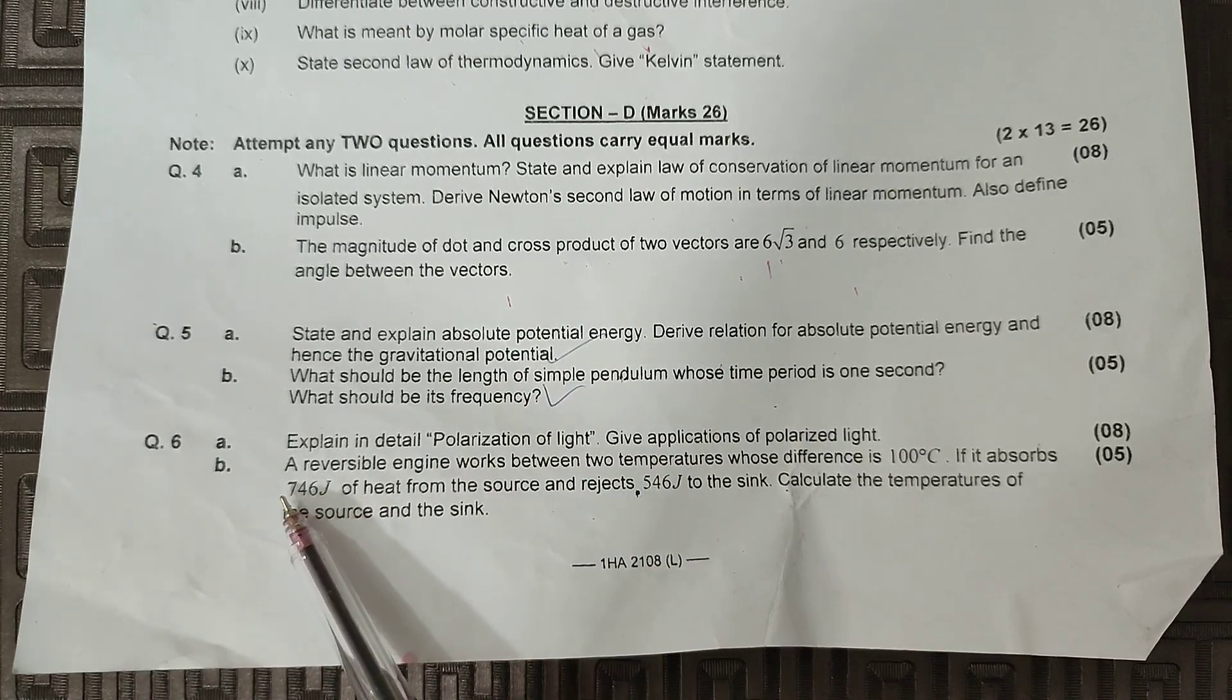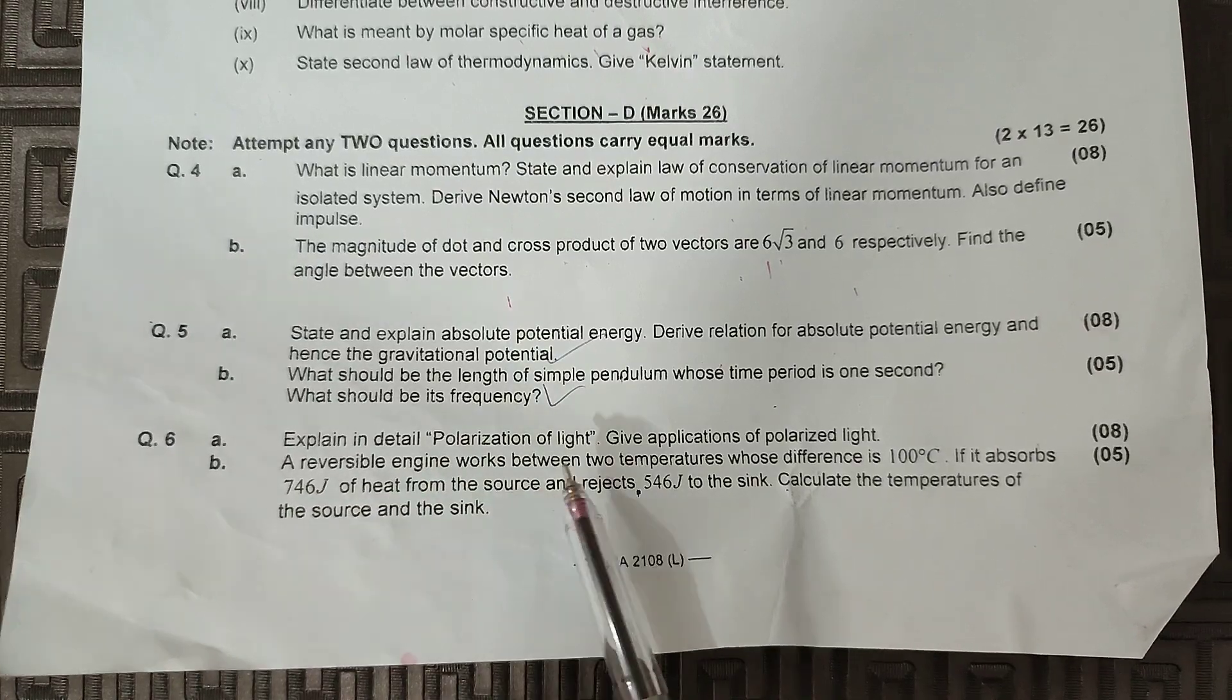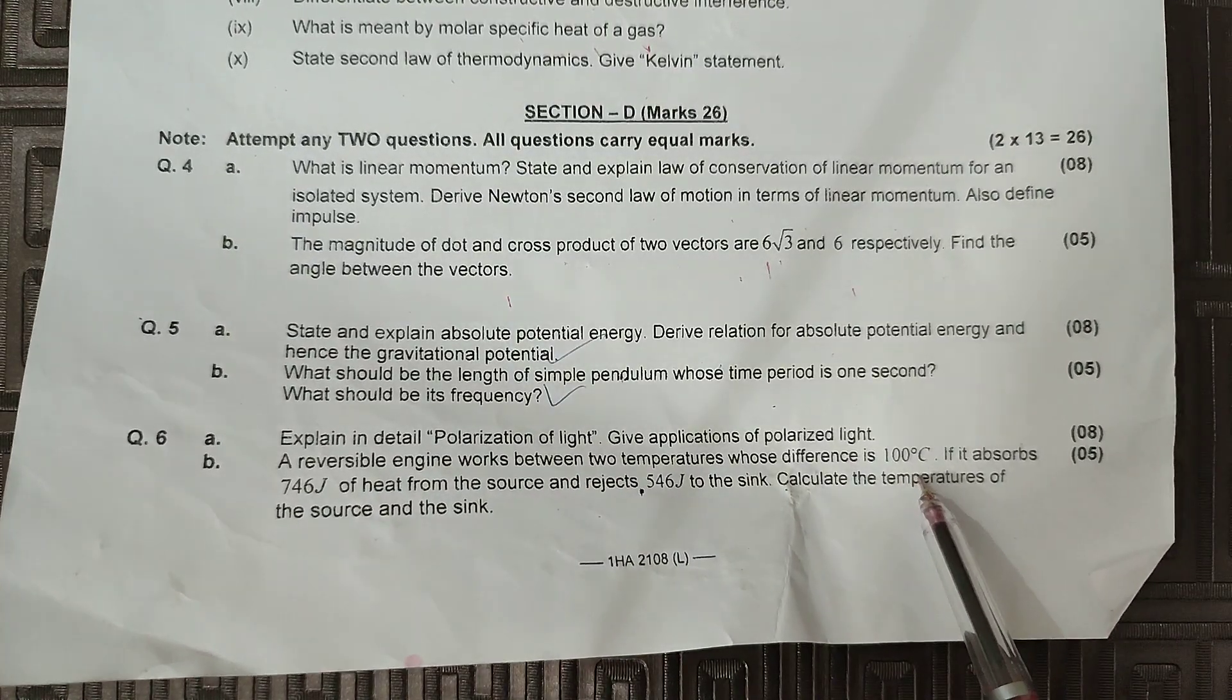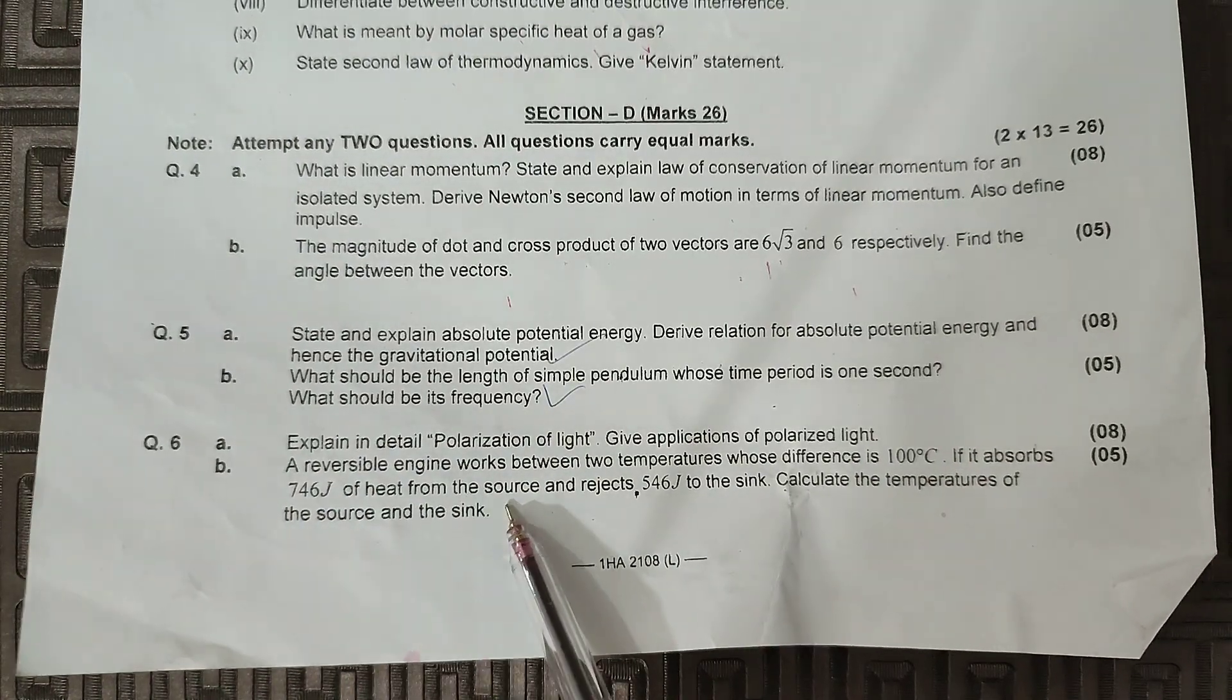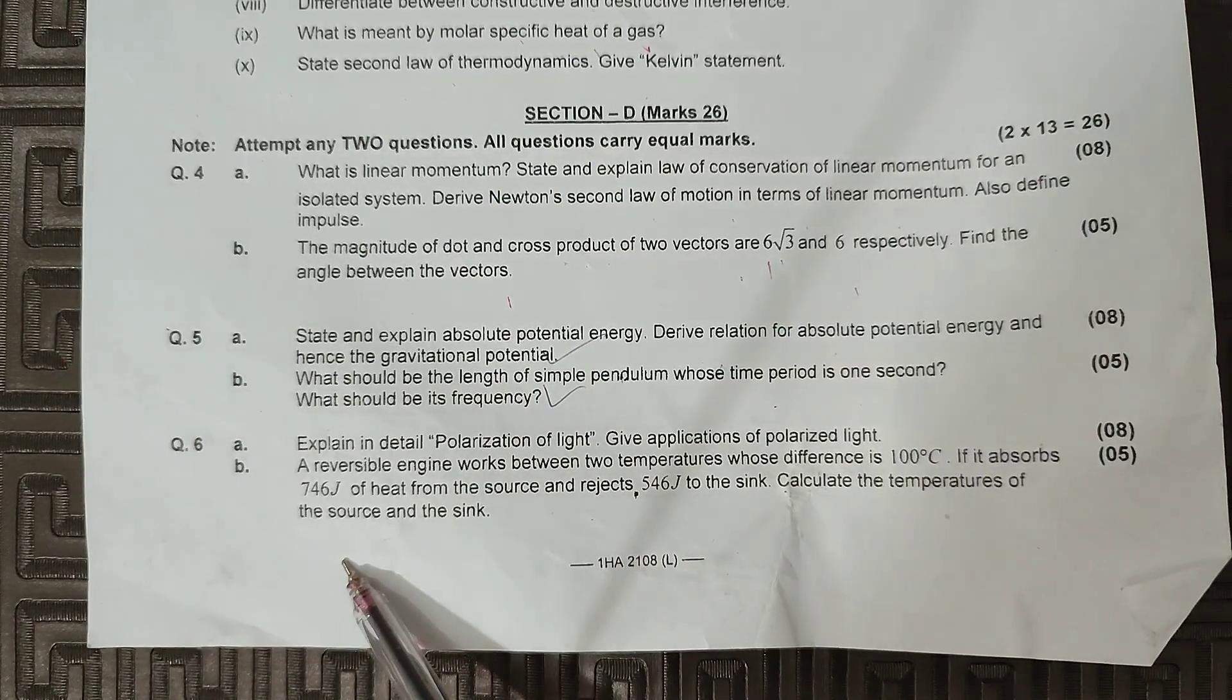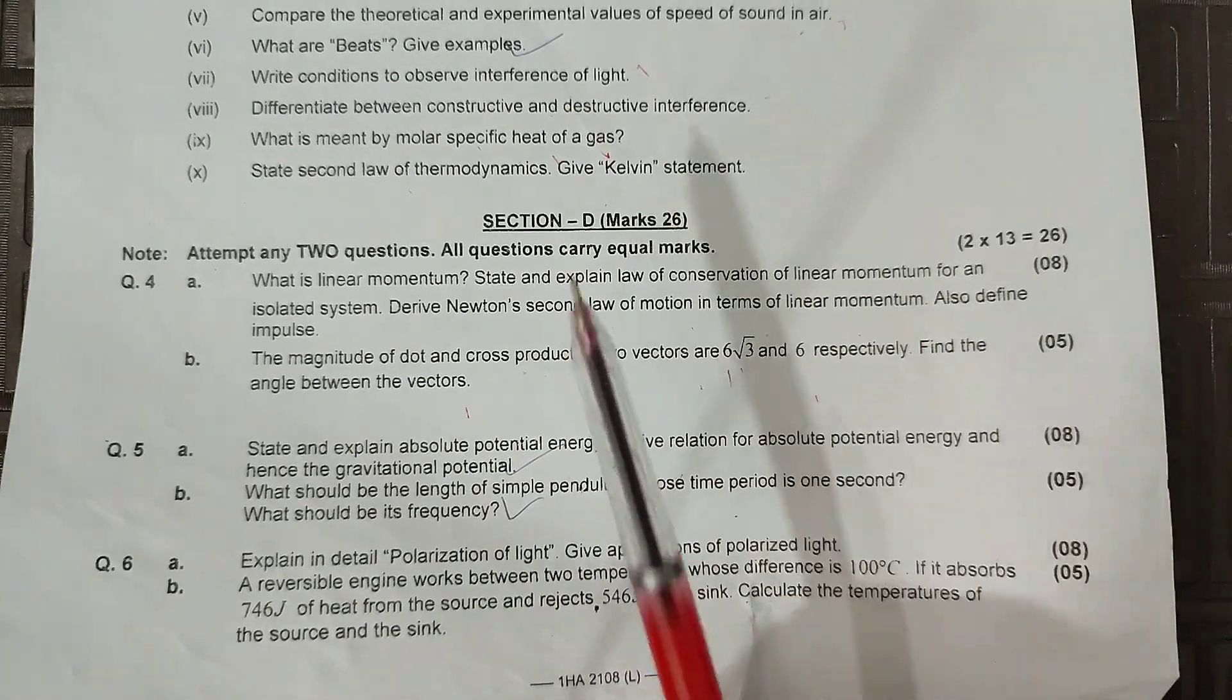Last me, aap ke paas aah raha ek numerical, Carnot engine related hai. A reversible engine works between two temperatures whose difference is 100 degree Celsius. If it absorbs 746 joules of heat from the source and rejects 546 to the sink, calculate the temperatures of the source and the sink. So yeh aap ke paas long questions hai.